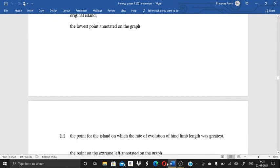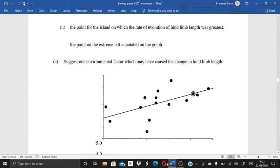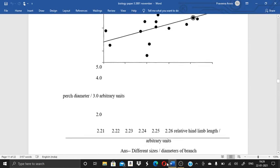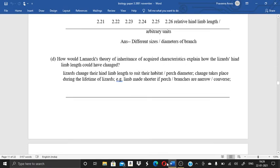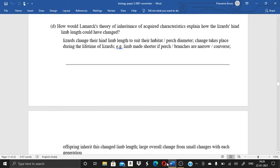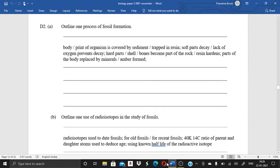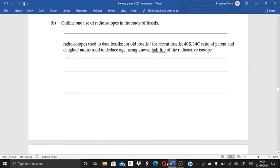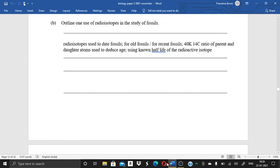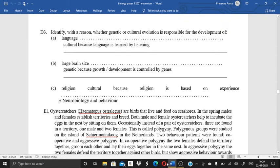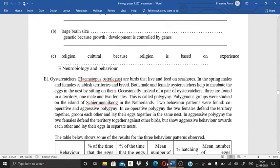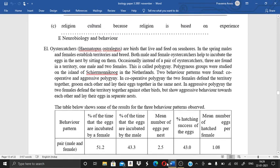So the lowest point, annotate on the graph the point for the island on which the rate of evolution of hind limb length was greatest. Suggest one environmental factor which may have caused the change in hind limb length. The graph has been given over here. Then the next question was, how would Lamarck's theory of inheritance of acquired characteristics explain how the lizard hind limb length could have changed? Next is, outline one process of fossil formation. Next, outline one use of radioisotopes in the study of fossils. Next question, identify with the reason whether genetic or cultural evolution is responsible for the development of language, second is large brain size, third is religion. So I have given you the answer for this.